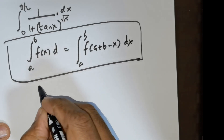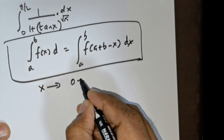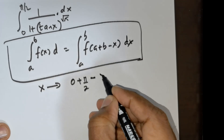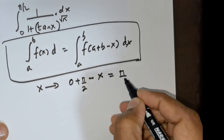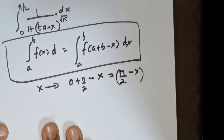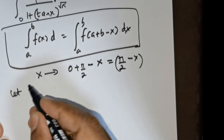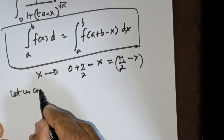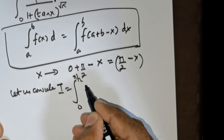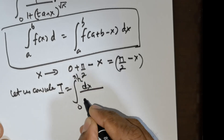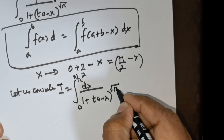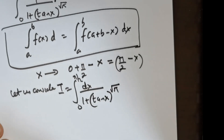What we will do is, in place of x, we will be substituting 0 + π/2 − x, so we will be replacing x with π/2 − x. Let us consider I to be equal to the integral from 0 to π/2 of dx divided by 1 + tan x raised to the power of root of π. This is what we have been given.